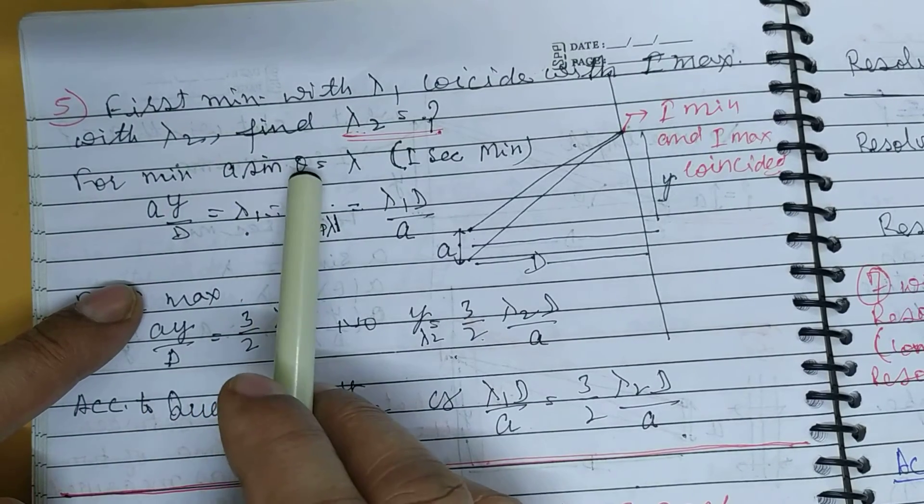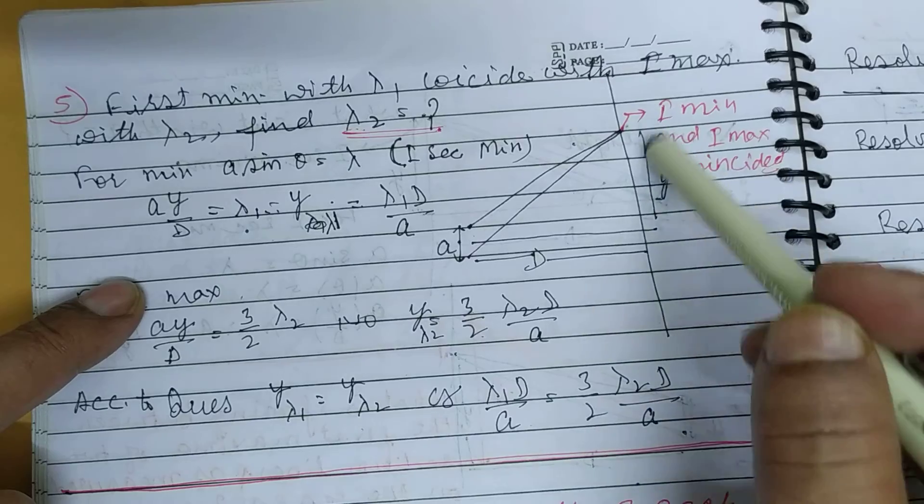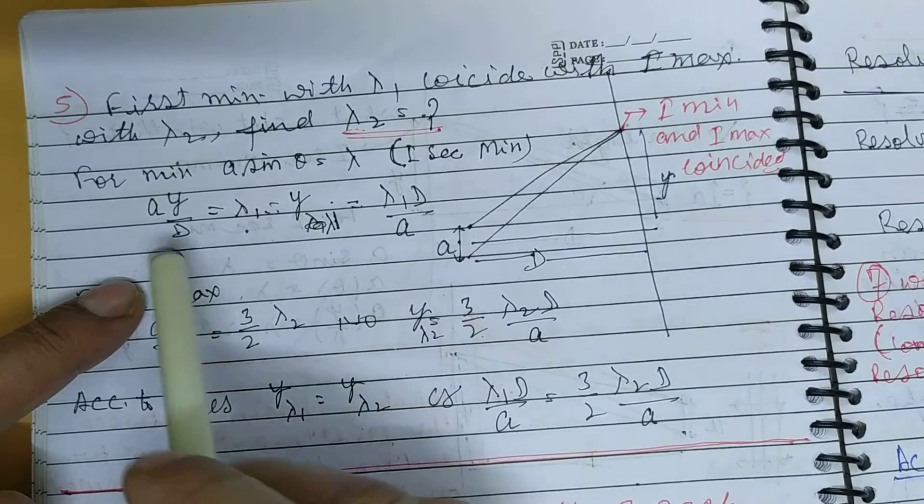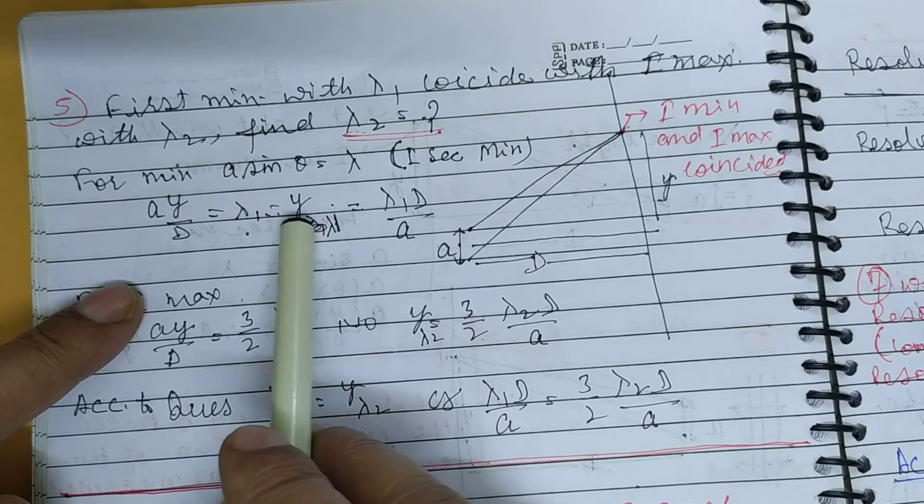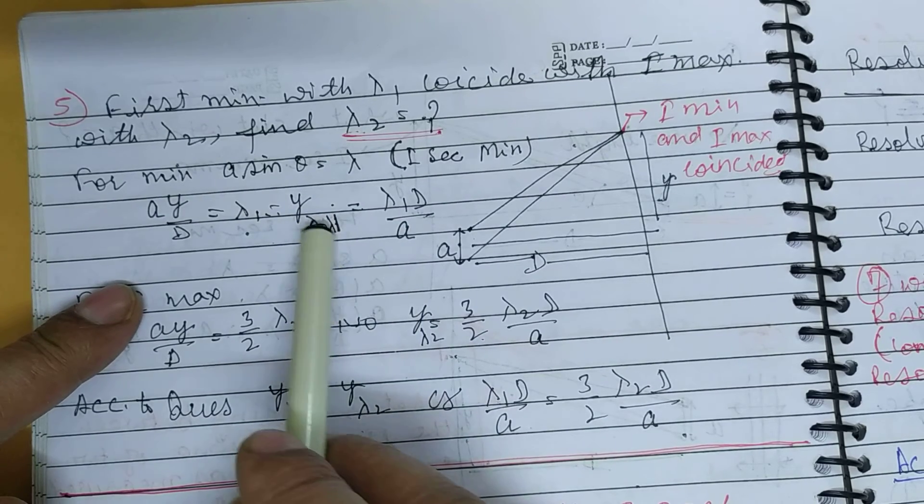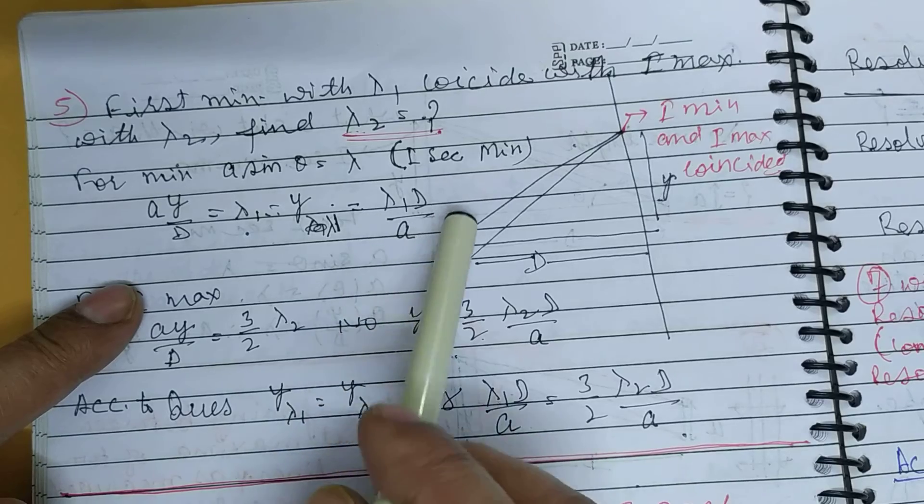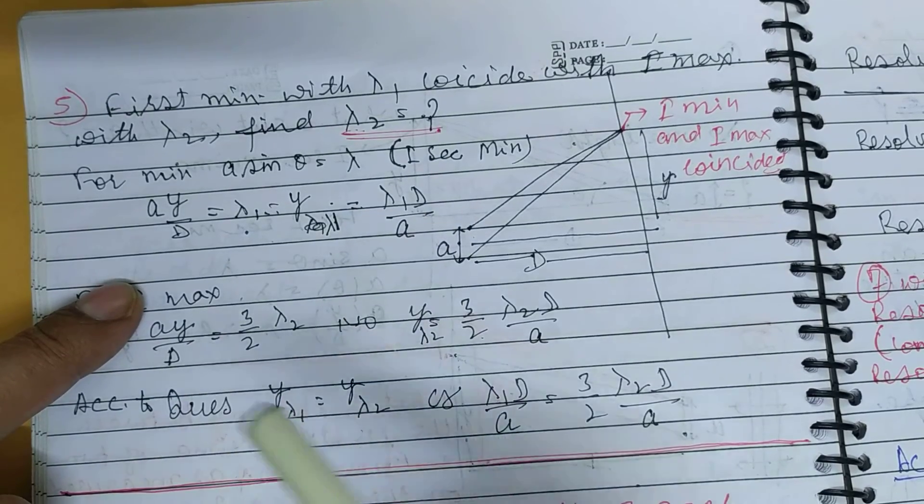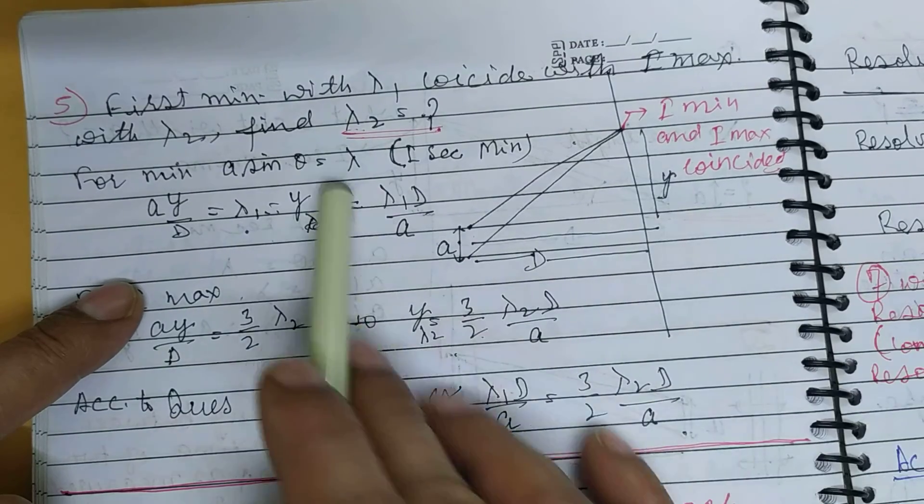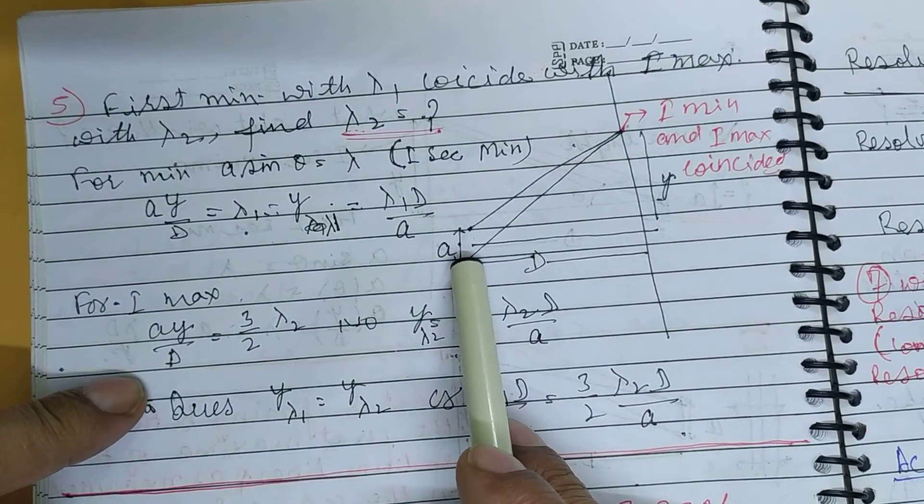So the value for first secondary minimum for wavelength lambda 1: when you get the value, and if you get the second experiment wavelength lambda 2, for first secondary maximum...